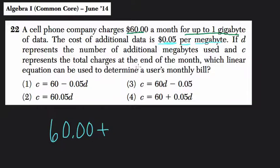If d represents the number of additional megabytes used and c represents the total charges at the end of the month, which linear equation can be used to determine the user's monthly bill? Well, I would write that 60 + 0.05d = c. My thinking here is that we have $0.05 times the number of megabytes that we're using, and that will give you the cost that we're adding on to $60. And then if you put these together, you get c, the total cost of the bill.